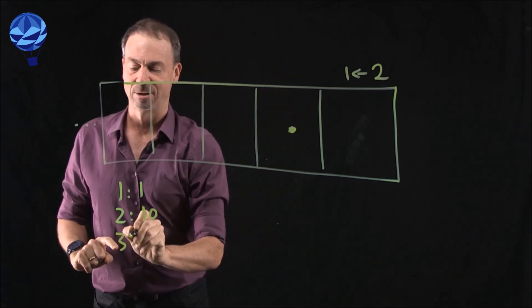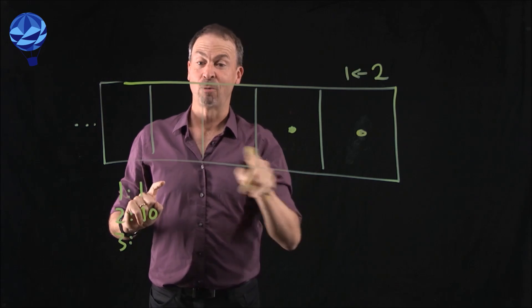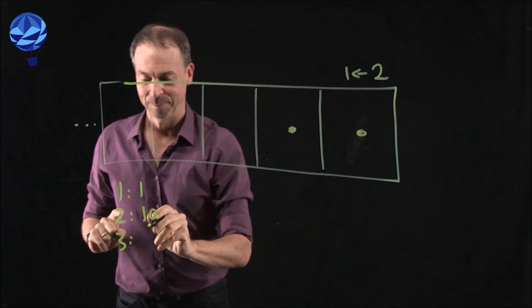Alright, here comes the third dot. Always the rightmost box, zoom. So what's the code for three? 1-1.